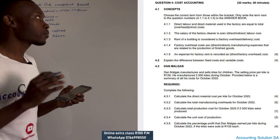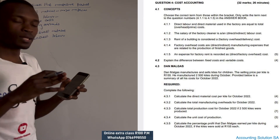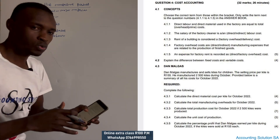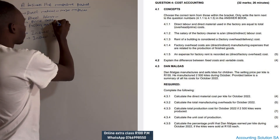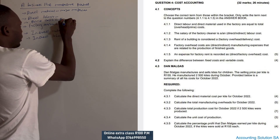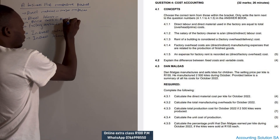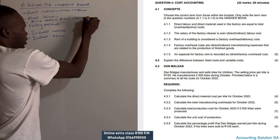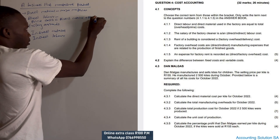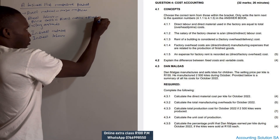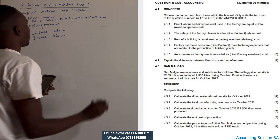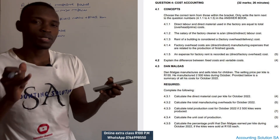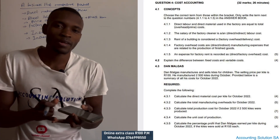Prime cost is when we add direct material and direct labor together. Prime cost equals direct material plus direct labor. When we talk about factory overheads, you can call it manufacturing overhead or indirect cost. Factory overheads are all those items that assist us to produce goods but are not directly involved — they are indirect.